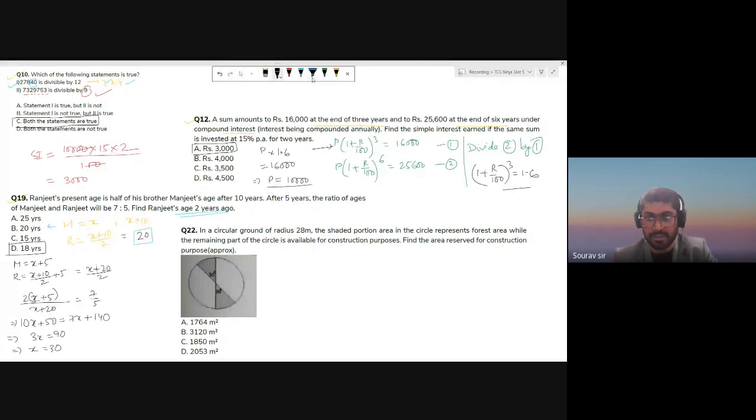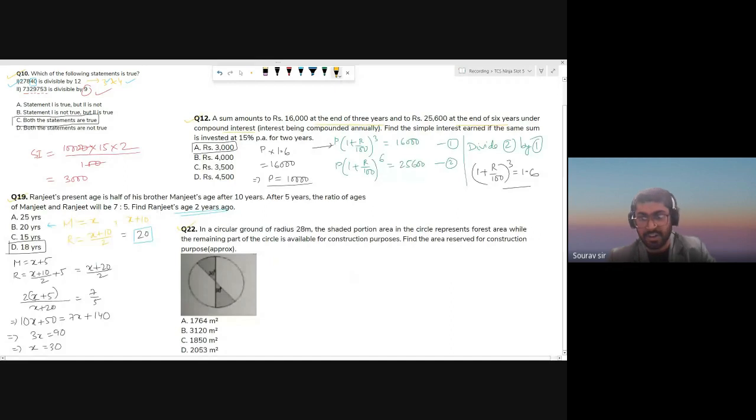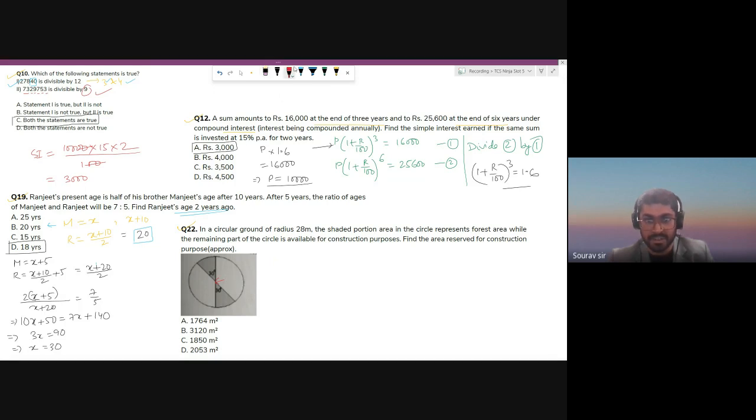Question 22 now. In a circular ground of radius 28 meters, so here this radius is 28 meters. The shaded portion in the circle represents forest area while the other portion is for construction purposes.